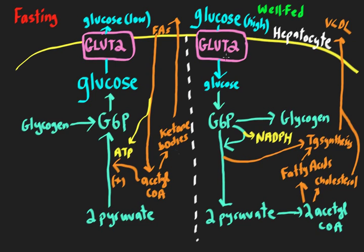The glucose transporters on the liver are always around, which is really important — you need them to always be there so glucose can go whatever direction it needs to. Those transporters are called GLUT2. Keep in mind that the glucose transporter regulated by insulin on skeletal muscle and adipocytes is GLUT4, which is translocated to the membrane when insulin is present and sequestered when insulin is low — regulated in a much different way. GLUT2 is constitutively expressed on the hepatocyte and simply lets glucose go down its concentration gradient.